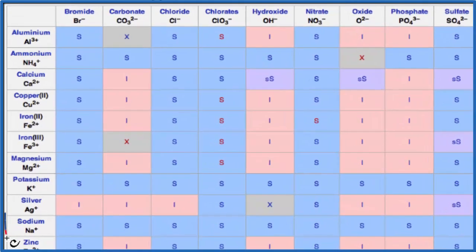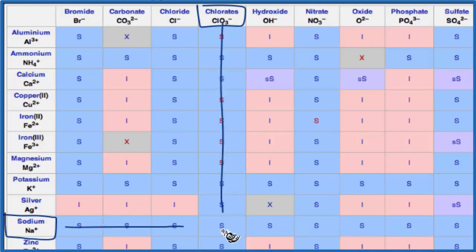we're looking for sodium right here, Na+. And then our anions, our negative ions, chlorate, ClO3-. So we're going to come across, come down, and we're going to see that sodium chlorate has an S.